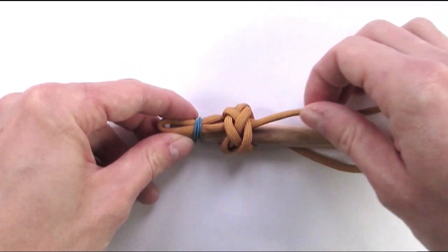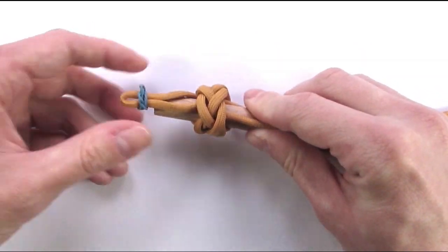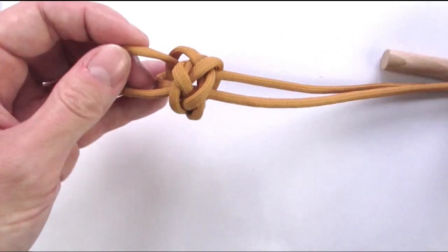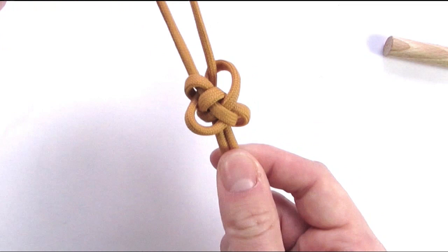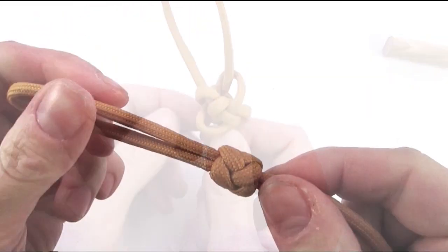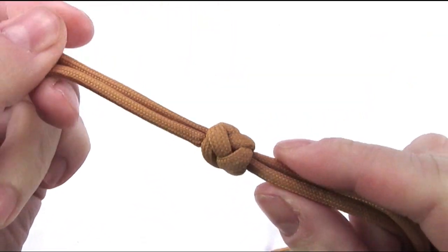Once you've done that your knot is tied, remove it from your mandrel and tighten it up. Once your knot is tightened up this is how it looks like.